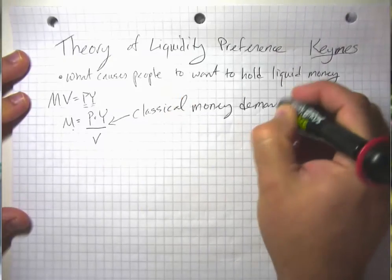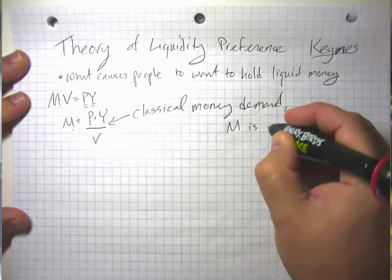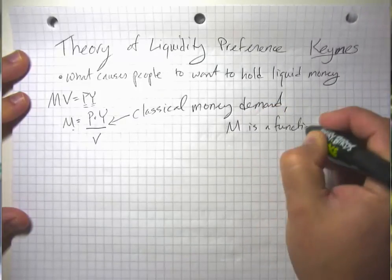Where money is a function, money demand is a function of the price level.